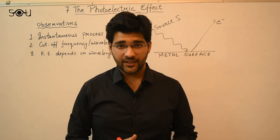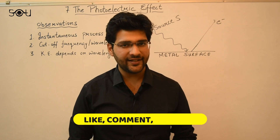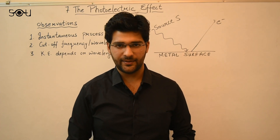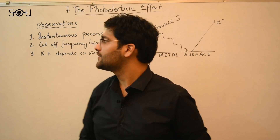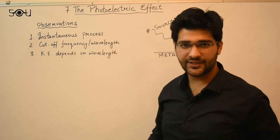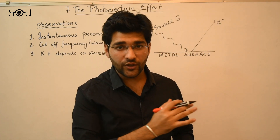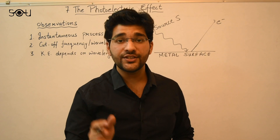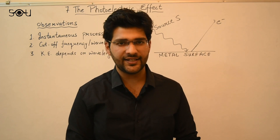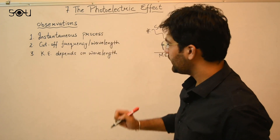Photoelectric effect was discovered back in 1887, so by 1905, we had some facts and observations regarding this experiment. There were three observations. The first is that the photoelectric effect is an instantaneous process — as soon as you shine light on the metal surface, an electron is knocked off within a nanosecond.